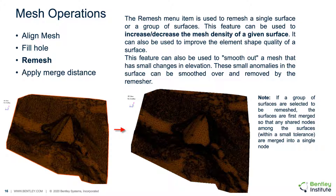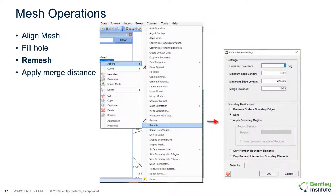It is worth noting that surface mesh elevations are not as significant for groundwater flow but remain quite significant if slope stability analysis is being performed. The remeshing algorithm has a number of selections to guide it, including minimum and maximum edge length and the merge distance. Any difference between nodes less than the merge distance will result in the nodes being merged together. A number of boundary restrictions can also be applied; further description can be found in the online help.